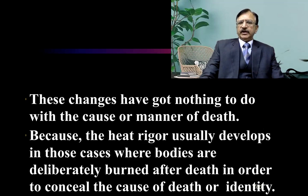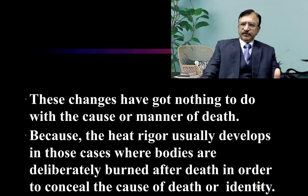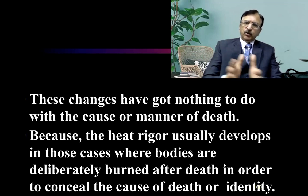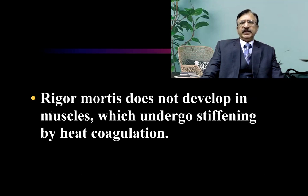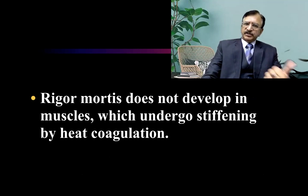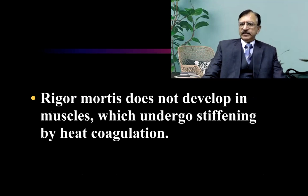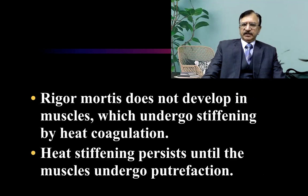These changes have nothing to do with the cause and manner of death. Heat stiffening usually develops even in cases where the body has been deliberately burned after death in order to conceal the cause of death or identity — meaning if an already dead body is burned, it will again assume the pugilistic attitude, and this is not indicative of the cause or manner of death. Similarly, rigor mortis does not develop in muscles which undergo stiffening due to heat coagulation, because the proteins have already coagulated and no further chemical process such as rigor mortis can occur. So the heat stiffening persists and muscles undergo coagulation.